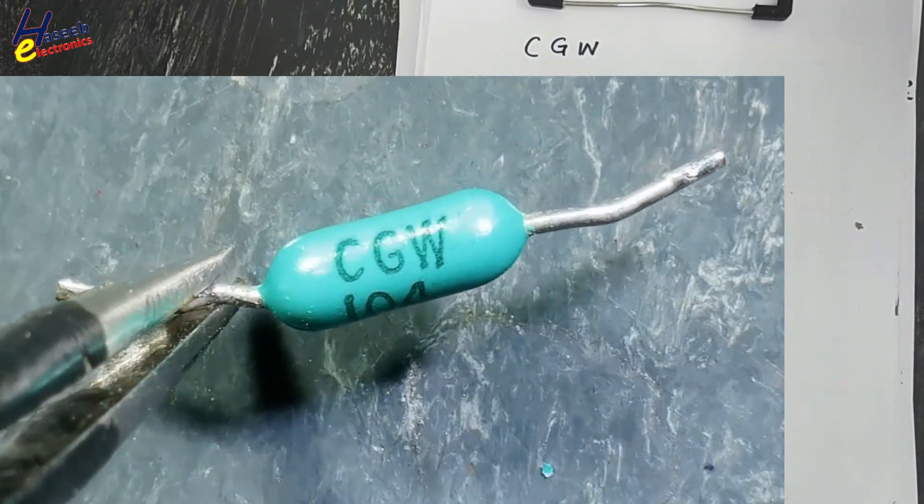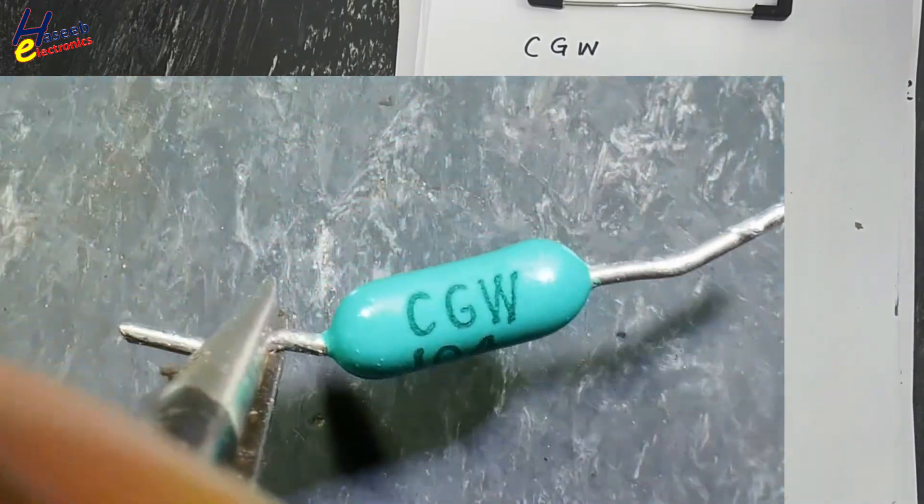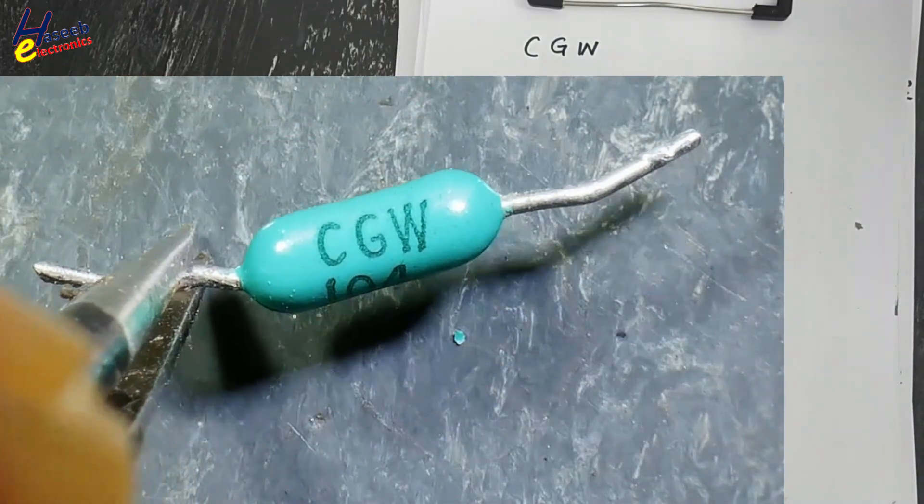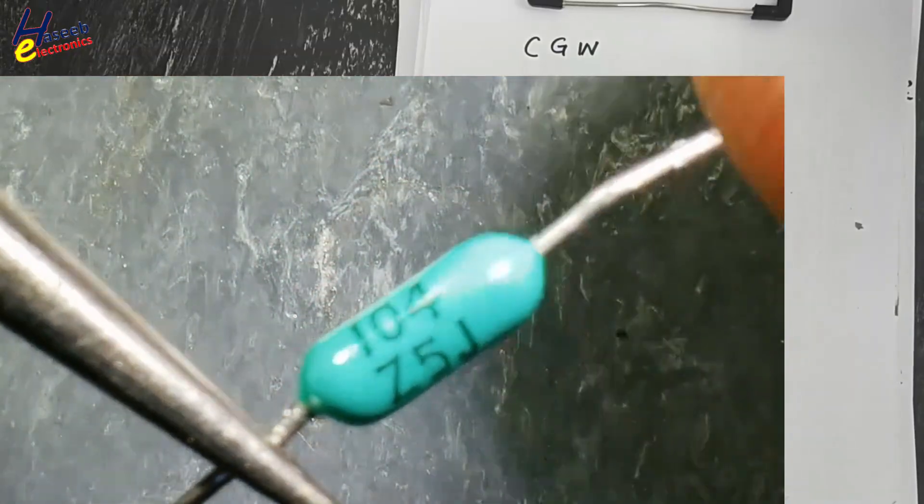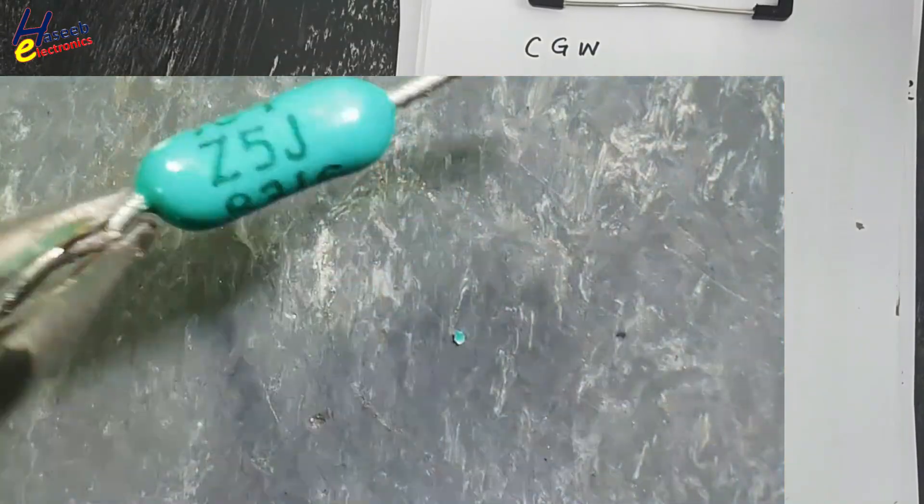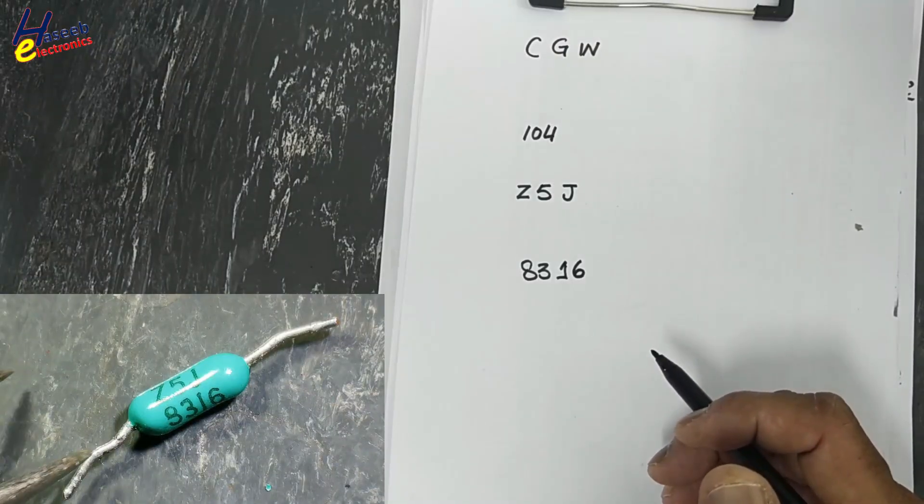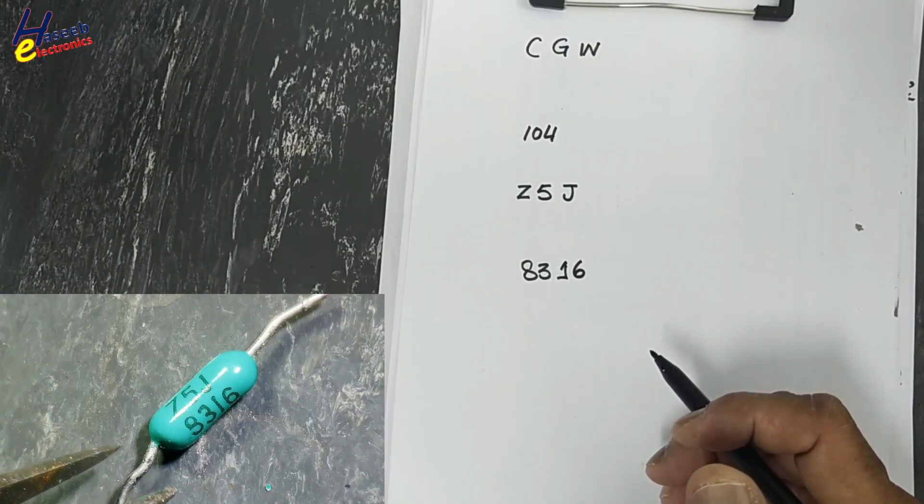Let's decode this marking on this axial ceramic capacitor CGW104Z5J8316. Aslamu alaykum wa rahmatullahi wa barakatuhu. Friends, welcome back to my channel.